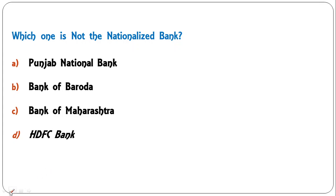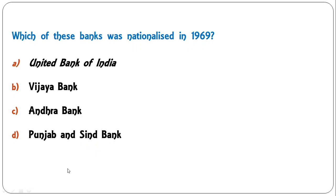Which one is NOT a nationalized bank? Options are Punjab National Bank, Bank of Baroda, Bank of Maharashtra, or HDFC. The first three are public sector and nationalized banks, whereas HDFC is a private sector bank — the largest private sector bank. So D is the correct answer.